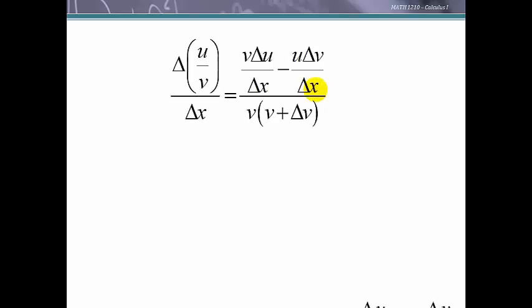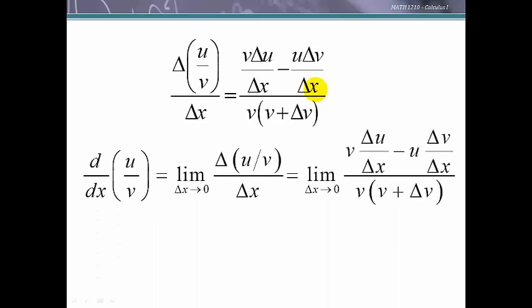Now we are going to take the limit as delta x approaches 0 of this, and so we know that this is in fact the derivative of the quotient u over v.